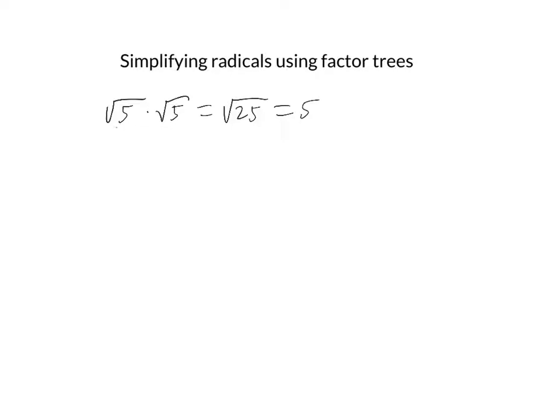And that's not a coincidence that those 5s are what shows up in your answer, because if you think about this another way, the square root of 5 times the square root of 5 is really the square root of 5 squared. Well, square root and squared are opposite operations. They cancel each other out, and so you're just left with the 5.